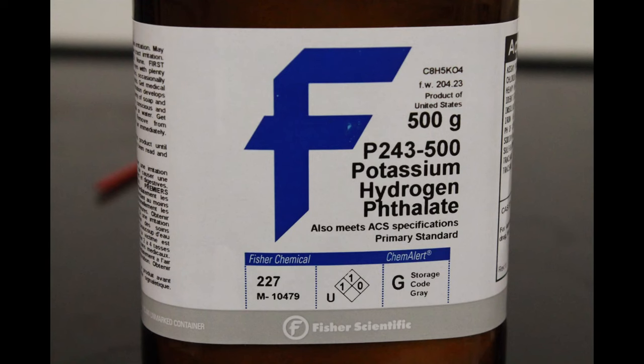Now we are ready to find the mass of our KHP. KHP stands for Potassium Hydrogen Phthalate and will react with NaOH in a 1 to 1 mole ratio. Note the formula weight of KHP here on the bottle. You will need this mass for your calculations as well.